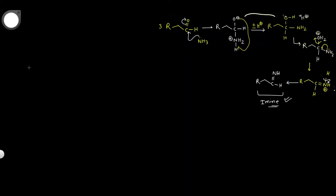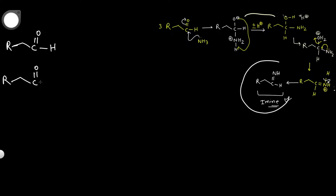Now we have the imine and two molecules of aldehyde left in solution. We have RCHO molecules here. Because we have NH3 in solution, it will do an acid-base reaction and take a proton from the alpha-carbon — this proton is more acidic — breaking that bond so that an enolate is formed.